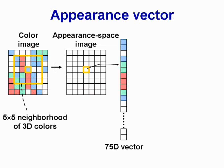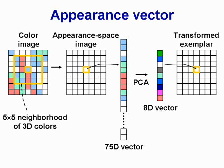The appearance vector at each pixel is formed by the pixel's 5x5 spatial neighborhood. We apply PCA to reduce the 75D vectors to 8D, thus creating an information-rich transformed exemplar.